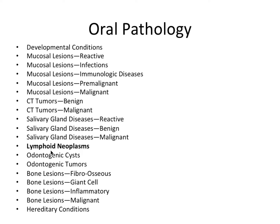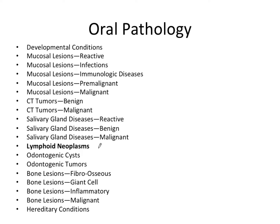Most lymphoid neoplasms occur in the lymph nodes, but occasionally they arise in extranodal tissue — meaning outside of the nodes — in tissue called MALT, which stands for mucosa-associated lymphoid tissue. That's where we make our oral connection back to oral pathology, because some of these have very interesting and unique oral as well as head and neck manifestations.